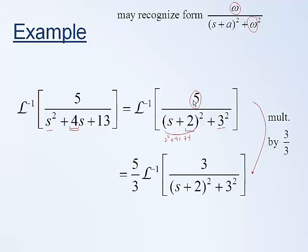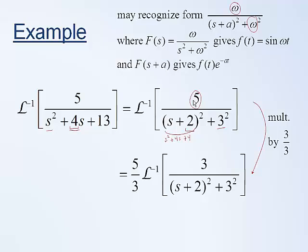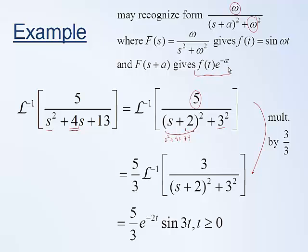We have an (s+a) term — the (s+2) — which represents a frequency shift, recognized as multiplication by an exponential e^{-at} in the time domain. This is property number 4. If we remove the shift, we have omega/(s^2 + omega^2), which from the table corresponds to sine(omega·t) in the time domain. So our f(t) is e^{-2t} · sine(3t), where omega is 3 and a is 2. The function is zero until t equals 0.